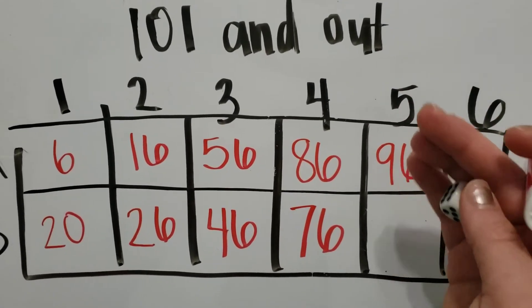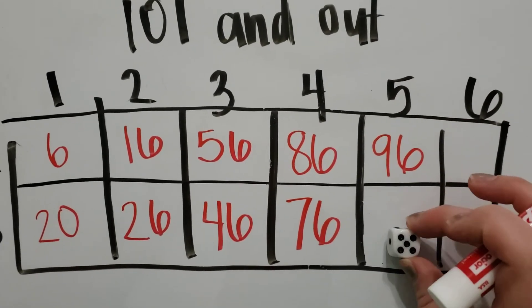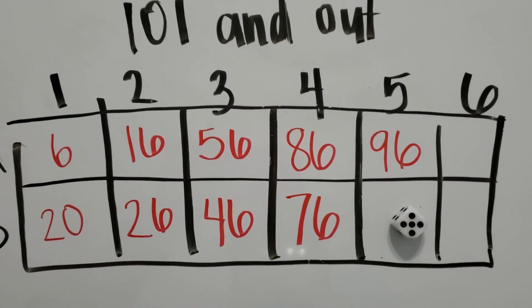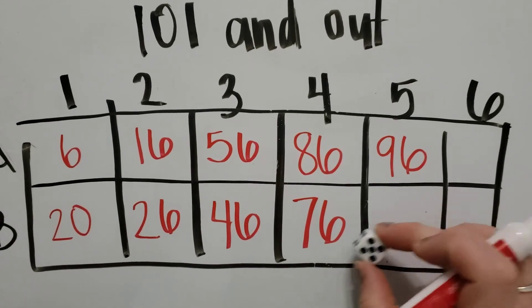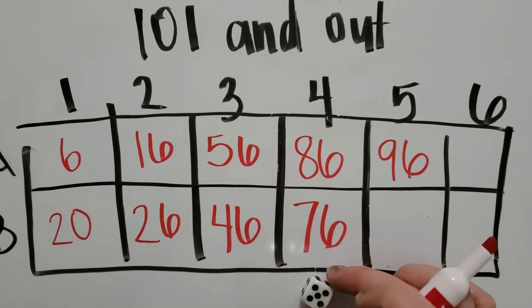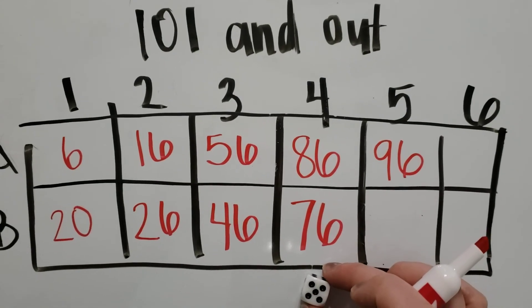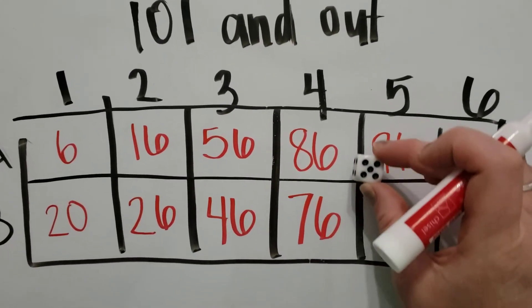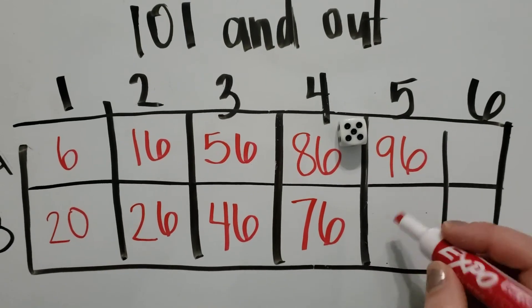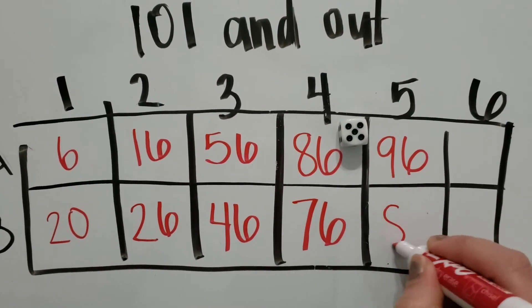Then team B, at 76, is going to roll and they got a five. This is an easy one because if I have 70 and I add 50, I'm going to go over 100 and I would automatically lose the game. So I am just going to add five, which will make my number 81.